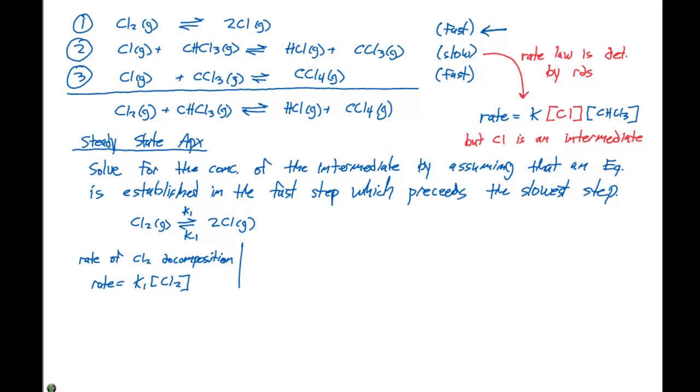On the flip side, we can look at the rate of Cl2 formation, which means we're gonna have 2Cl going over to Cl2, or this reverse reaction here. That rate is gonna be equal to K to the minus one times the concentration of Cl, that quantity squared.